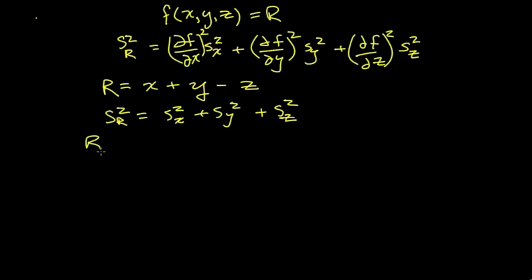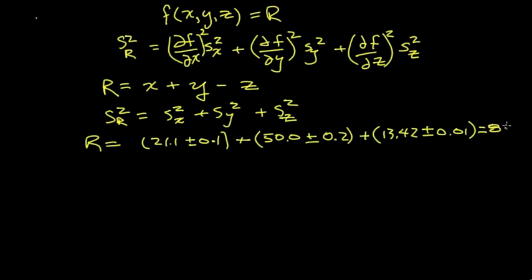Let's take a concrete example. Let's suppose r is just the sum of three quantities, and we're going to show in the bracket the plus and minus of their standard deviation. So we're going to add 21.1 to 50.0, and the 50 has an uncertainty or standard deviation of 0.2, and add 13.42 with a standard deviation of 0.01. And r works out to be just 84.5, the next digit would be a 2.